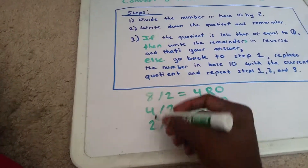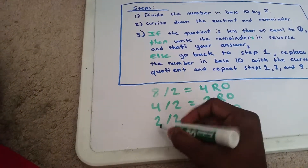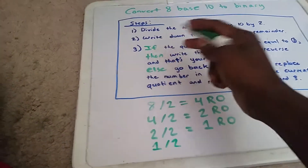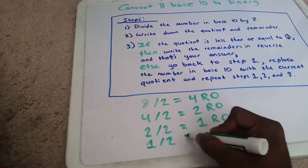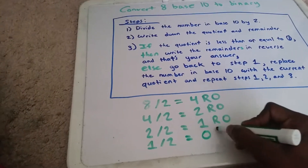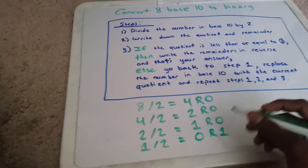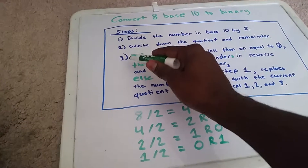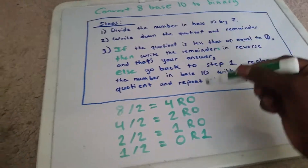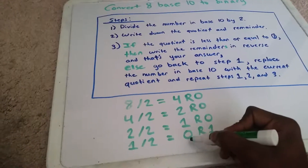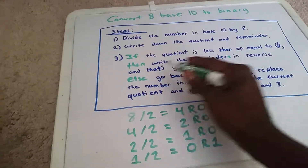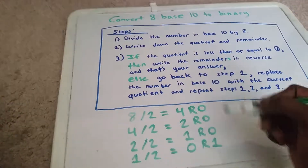We replace the 2 with 1 and get 1 divided by 2. Going to step 2, we write down the quotient and the remainder. Our quotient is 0, and our remainder is 1. We go to step 3 and check if the quotient is less than or equal to 0 — yes, the quotient is 0 this time. So we write down the remainders in reverse, and that should be our answer.